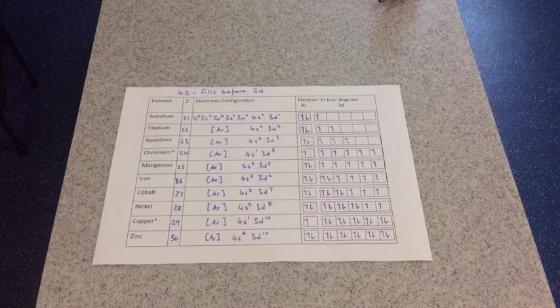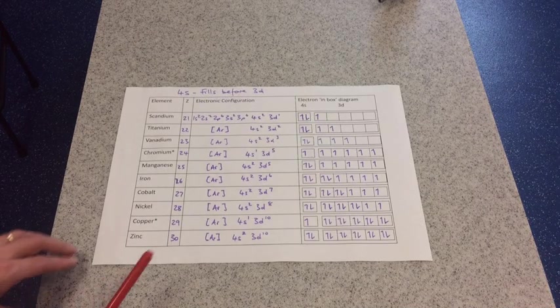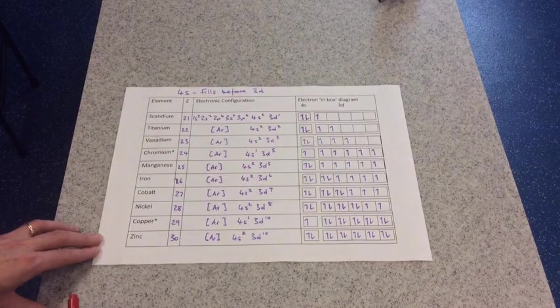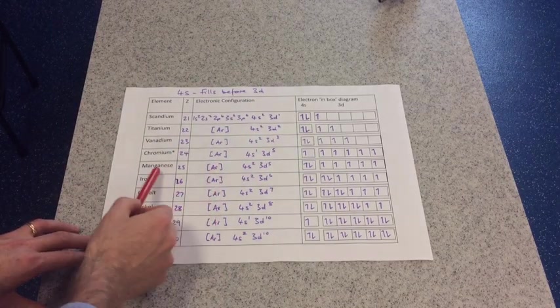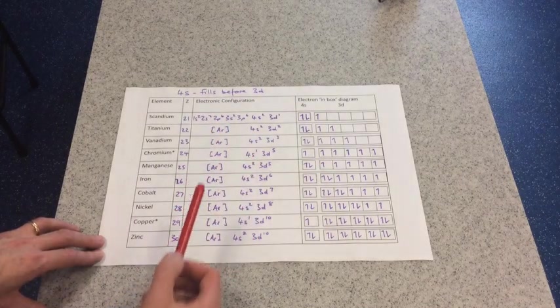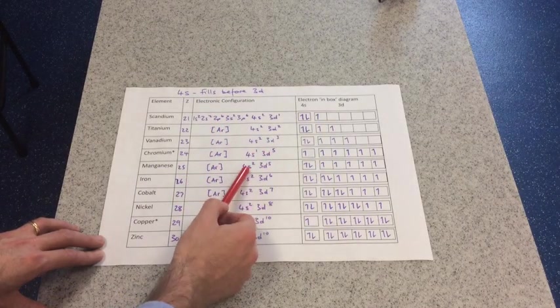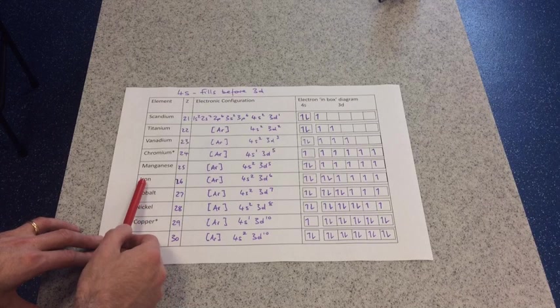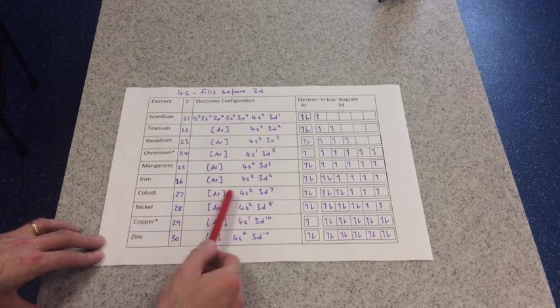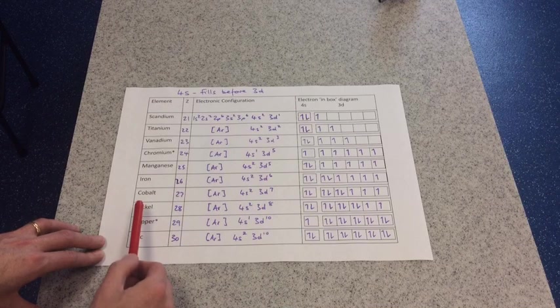So we've got the table completed now, and if we pick up from where we left off, the last one we did was the awkward one, chromium. You can see manganese just starts to pick up the pattern again. So we end up with 4s2, 3d5, iron 4s2, 3d6, cobalt 4s2, 3d7, nickel 4s2, 3d8.